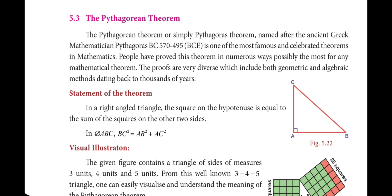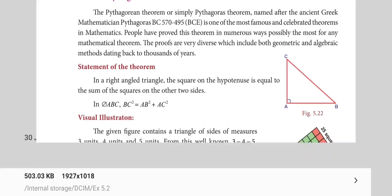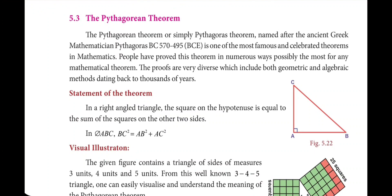In triangle ABC, BC square — that is, the hypotenuse side — is equal to AB square plus AC square. That is what is given here.